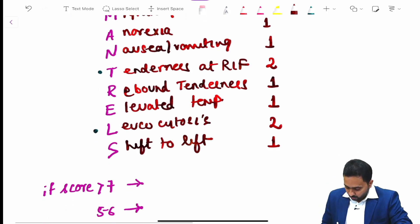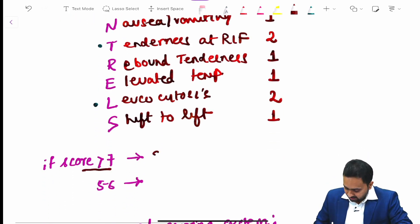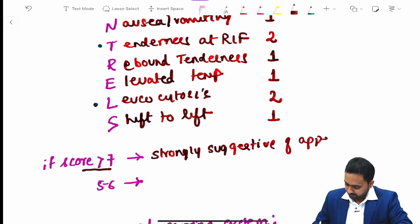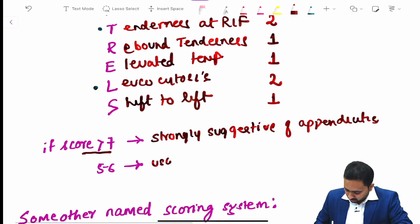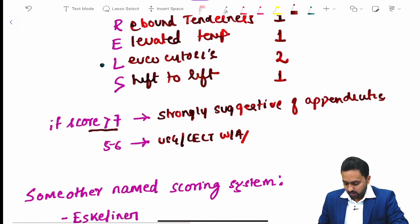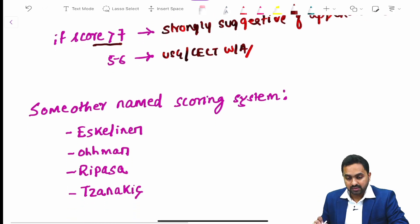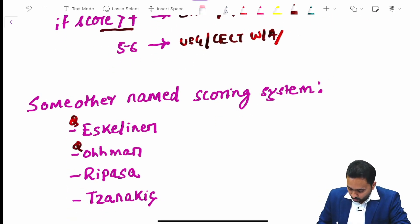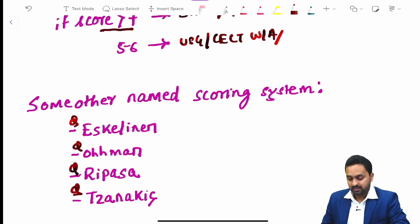If the Alvarado score is more than 7, it is strongly suggestive of appendicitis. A score of 5 to 6 requires USG or further CT scan of the whole abdomen. Other named scoring systems for appendicitis include the Eskelinen, Ohmann, RIPASA, and Tzanakis scores.